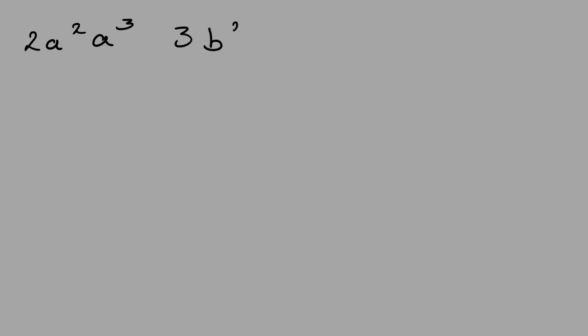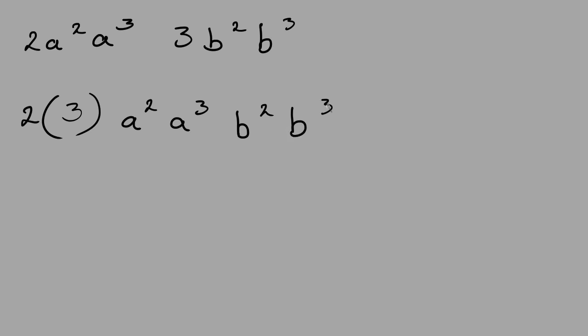Now consider 2a squared times a to the power of 3 times 3b squared times b to the power of 3. Because they're all multiplied together it doesn't matter which order you do it in, so you can rewrite the question as 2 times 3 times a squared times a to the power of 3 times b squared times b to the power of 3. Multiply 2 times 3 which is 6. Then add the exponents for a: 2 plus 3 gives a to the power of 5. And for b: 2 plus 3 gives b to the power of 5. So the answer is 6a to the power of 5 times b to the power of 5.